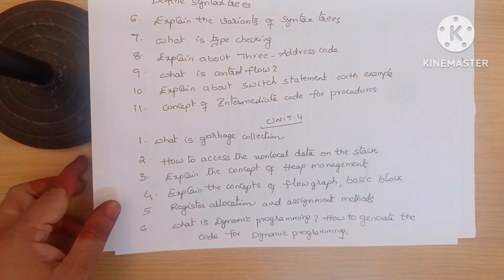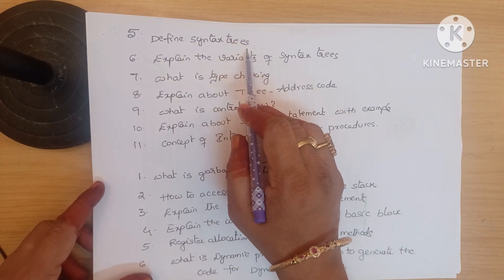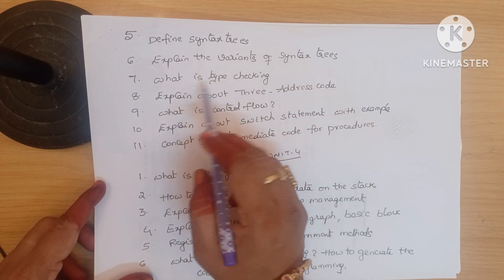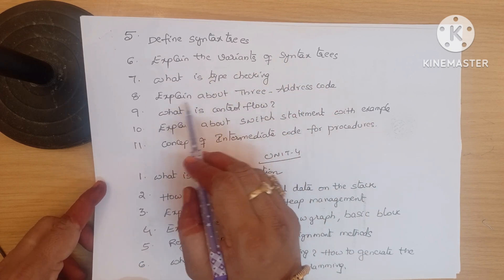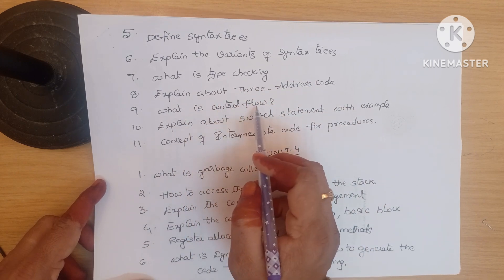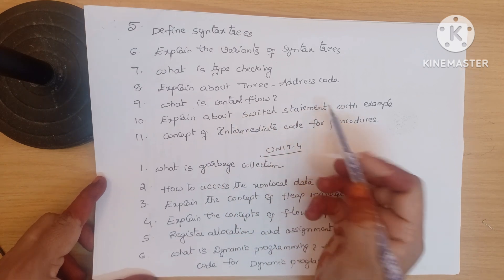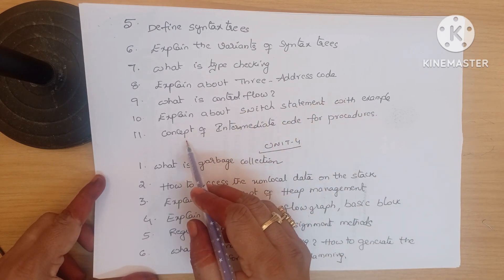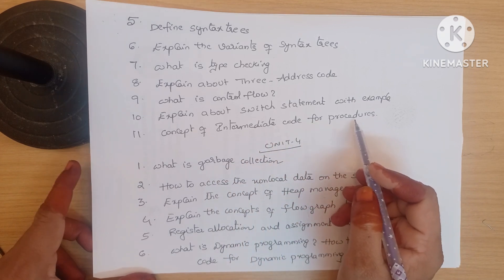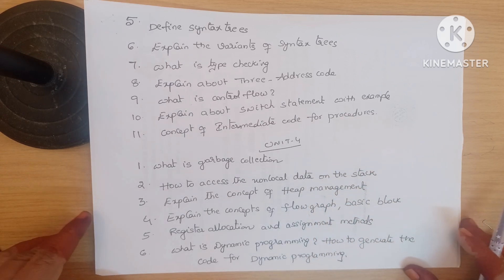Next: define syntax trees and explain the variants of syntax trees. What is type checking. Explain about three-address code — an important question. What is control flow — explain about switch statements with an example. Next: explain the concept of intermediate code for procedures. These are the short answer important questions in Unit 3.